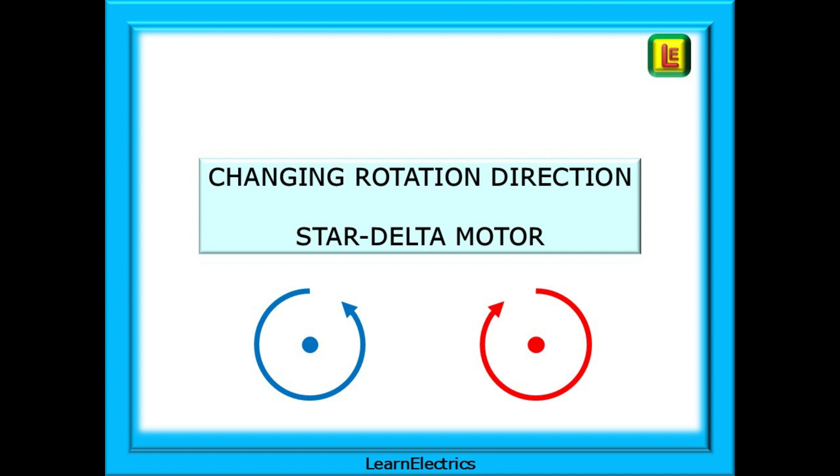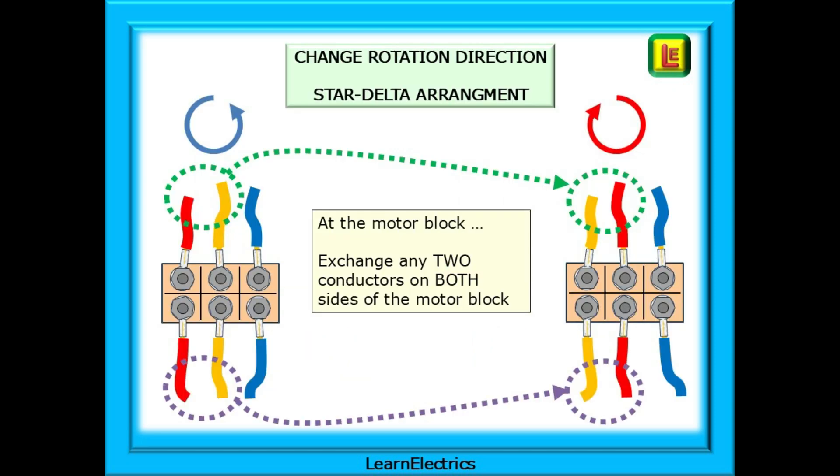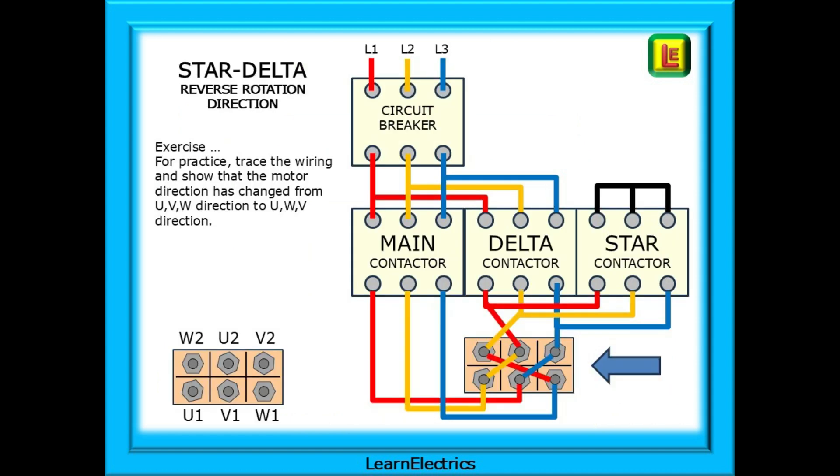And lastly, a frequent question: how do we change direction with a star delta starter? To change rotation direction with a star delta arrangement, there are three methods. As previously mentioned, I prefer to make my changes at the motor terminal block. To do this, exchange any two conductors on both sides of the motor block. In this example we've exchanged the red and yellow supply conductors at W2 and U2, so we must exchange the red and yellow supply wires at terminals U1 and V1. And here is that change of wiring shown at the motor block. For practice, trace the wiring and show that the motor direction has changed from UVW direction to UWV direction, and I'll leave that one with you. Pause the video and follow the wiring.